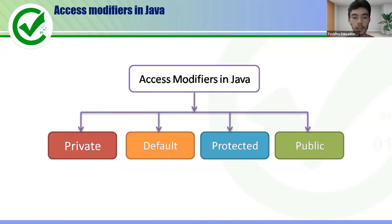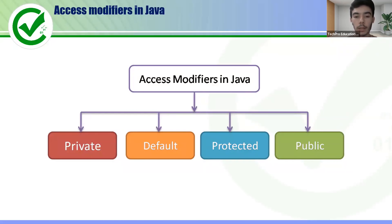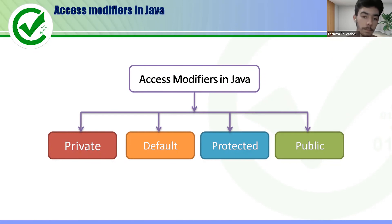Protected access modifier has similar functionality to default — you cannot access it from outside the package — but child classes are allowed to access protected members from outside the package. If you have a parent-child relationship with a class outside the package, you can access it when the modifier is protected.